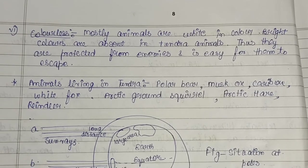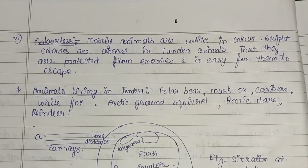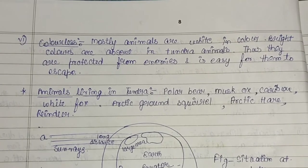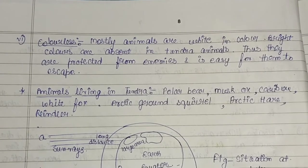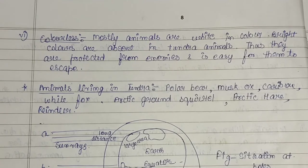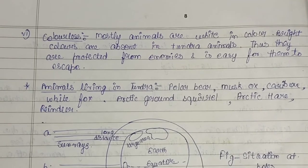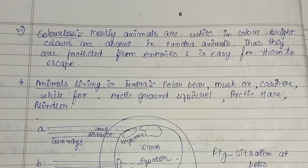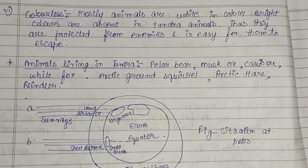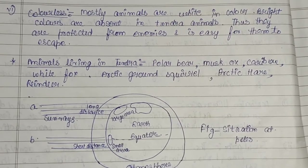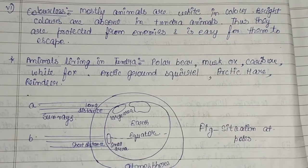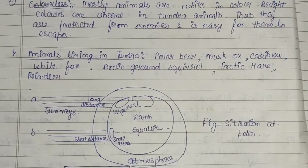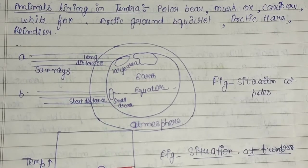Another adaptation is coloration — most tundra animals are white in color, for example the polar bear. Bright colors are absent, which protects them from predators by camouflaging with the white ice, making it easy for them to escape. Examples of animals living in the tundra include polar bear, musk ox, caribou, white fox, arctic ground squirrel, arctic hare, and reindeer.